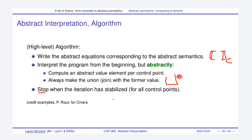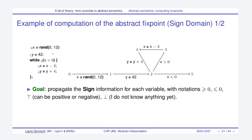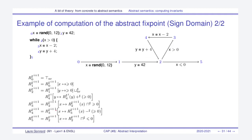I will now make a demo. Before the demo, note that I stop when the iteration has stabilized — at this point I haven't told you whether this iteration always stabilizes. I take an example of a program that operates on x and y variables and compile it into the control flow graph. I want to propagate sign information for each variable at each control point: positive gets this notation, negative gets this notation, top means it can be positive or negative, and bottom means I don't know anything yet. I will use vectors of value-of-x and value-of-y.